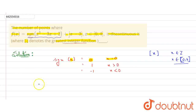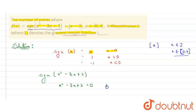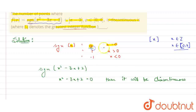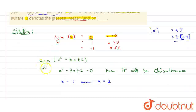First, let's talk about the signum function: signum of (x² - 3x + 2). It will be discontinuous when the inner value equals 0, that is, when x² - 3x + 2 = 0. This is a quadratic equation, and solving it gives x = 1 and x = 2. So the signum part of the function is discontinuous at 2 points: x = 1 and x = 2.